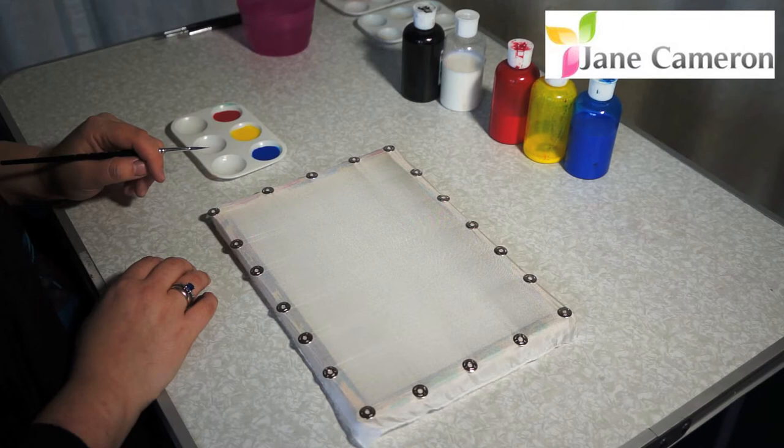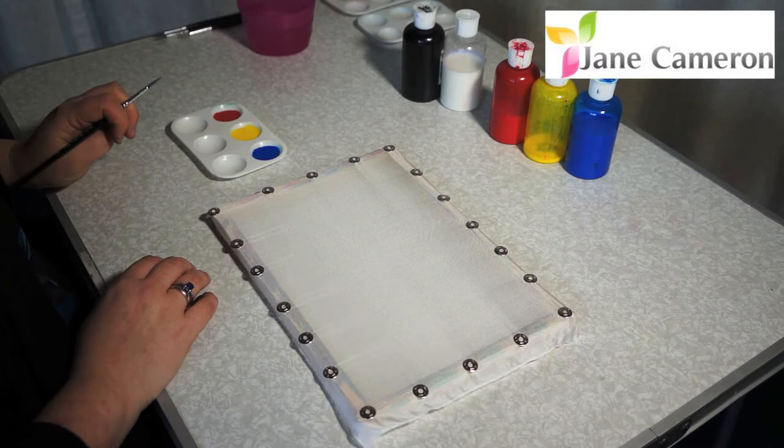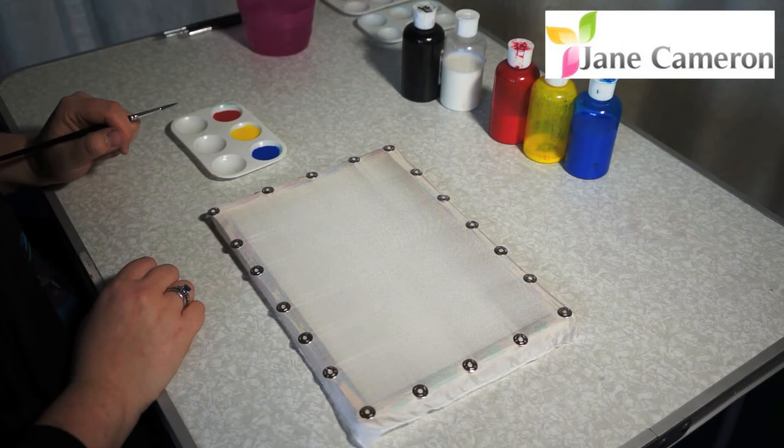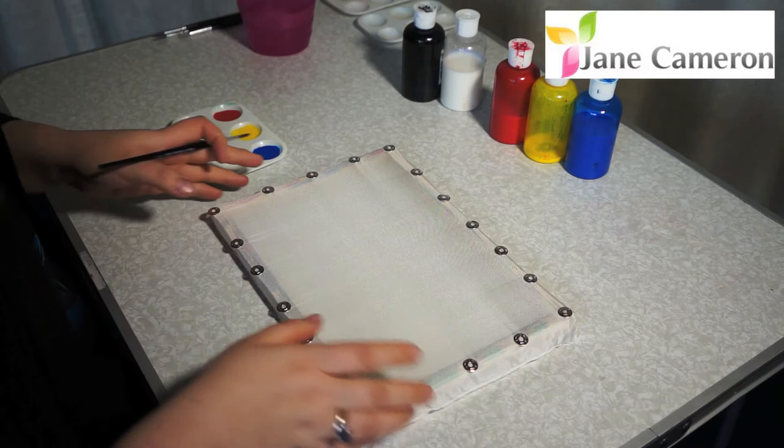The white isn't actually white. It's a mixer that's the same consistency as your silk paint. And that's why you can mix with water, but mixing with the white mixer means it's the same consistency, so your colours will all spread evenly across the silk.